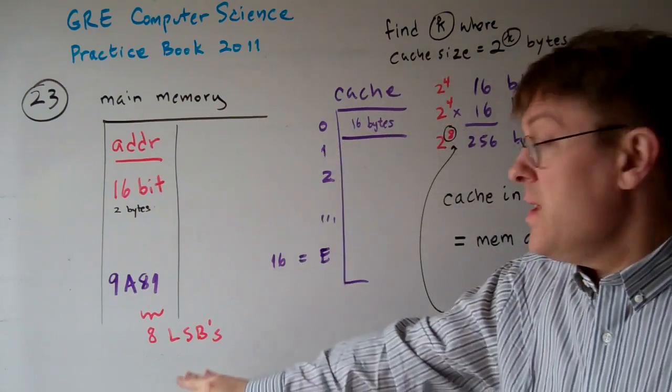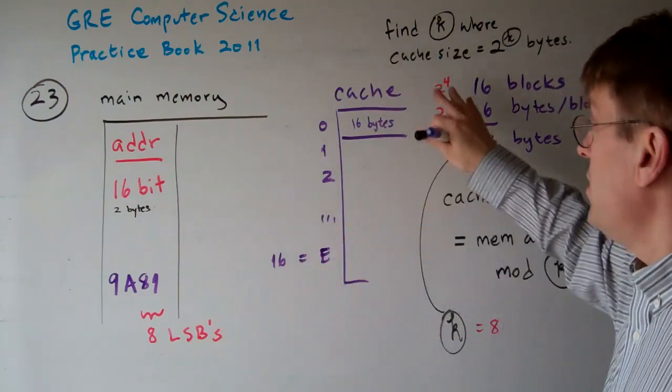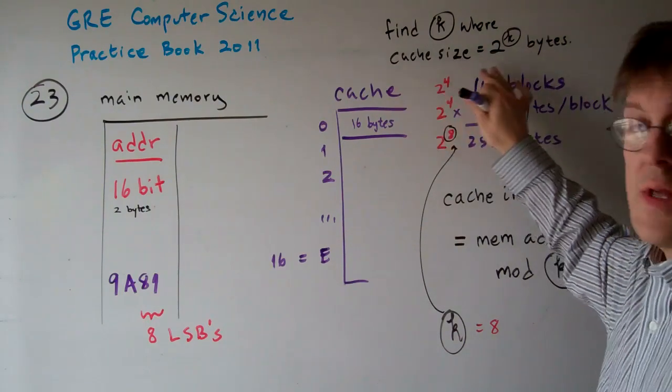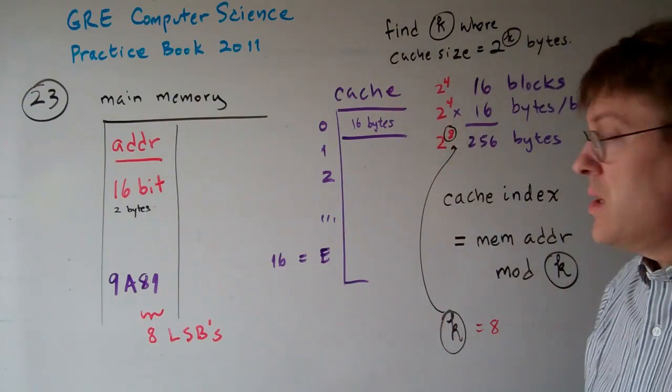To calculate how many of these least significant bits, you have to compute the size of the cache and find k, where k is 2 to the k bytes, which is the cache size. I hope that's clear.